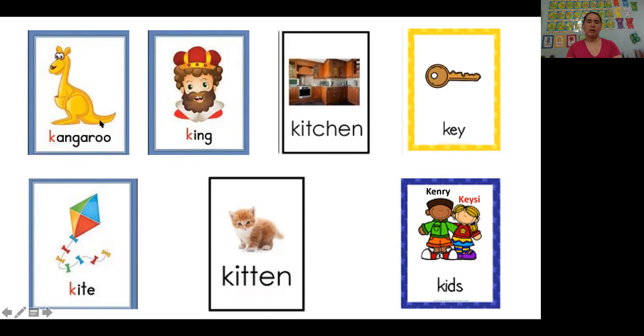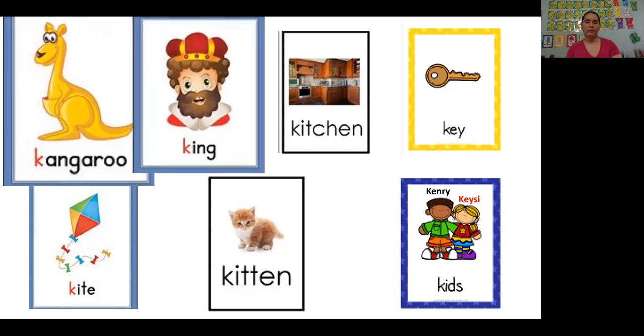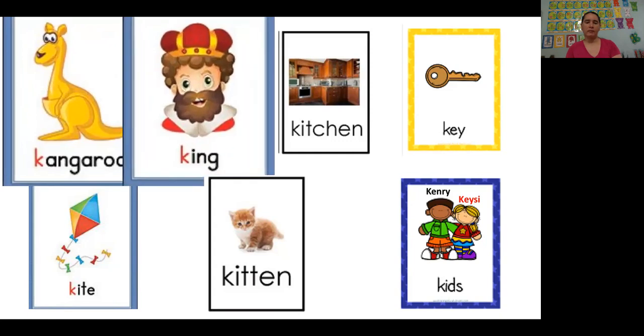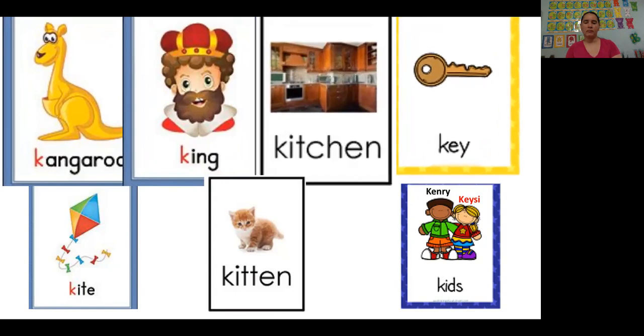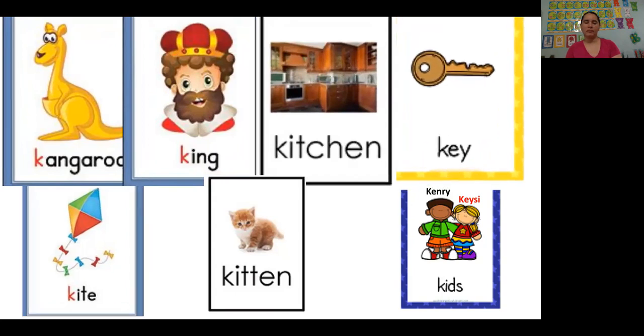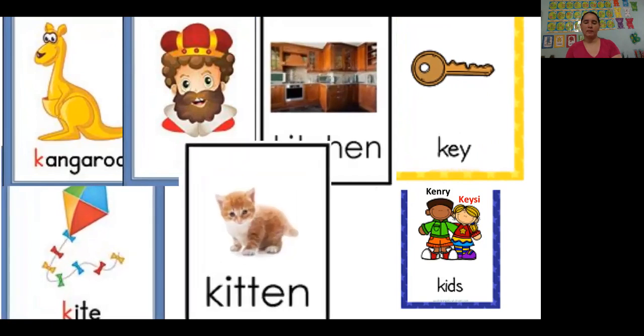Now again, you are going to practice with me. Kangaroo. King. Kitchen. Key. Kite. Kitten. And kids. Very good. And these are two proper names that write with the uppercase K. That was Kenny and Casey.